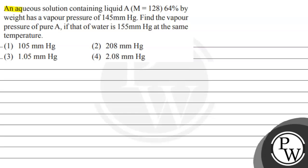Hello. Let's read this question. An aqueous solution containing liquid A with molar mass equal to 128, 64% by weight, has a vapor pressure of 145 mmHg. Find the vapor pressure of pure A if that of water is 155 mmHg at the same temperature. The options given are: 105 mmHg, 208 mmHg, 1.05 mmHg, and 2.08 mmHg.